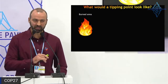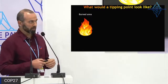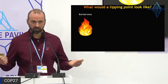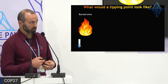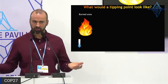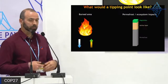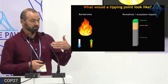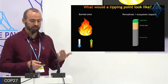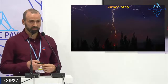When thinking about tipping points in the context of wildfire, we can consider burned area: are we seeing more and more burned area crossing some threshold resulting in a tipping point? Burned area is determined by both top-down controls — meteorology and climate — and bottom-up controls — ecosystems, vegetation, and soils. We can also think about tipping points in terms of fire impacts on permafrost and ecosystems.